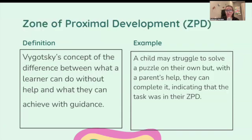Zone of proximal development, or ZPD: Vygotsky's concept of the difference between what a learner can do without help and what they can achieve with guidance. For example, a child may struggle to solve a puzzle on their own, but with a parent's help they can complete it, indicating that the task was in their ZPD.